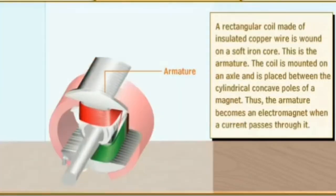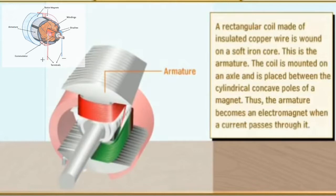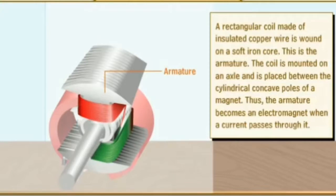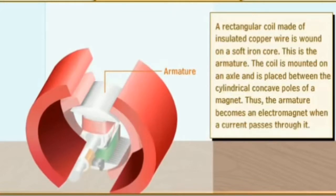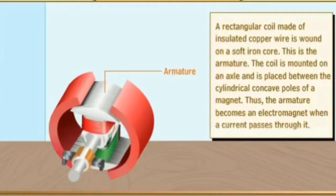A rectangular coil made of insulated copper wire is wound on a soft iron core. This is the armature. The coil is mounted on an axle and placed between the cylindrical concave poles of a magnet. Thus, the armature becomes an electromagnet when a current passes through it.